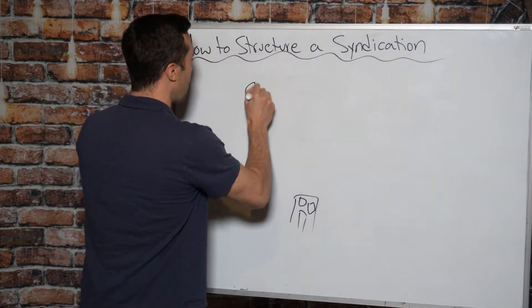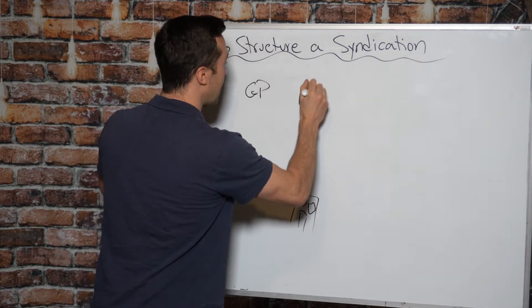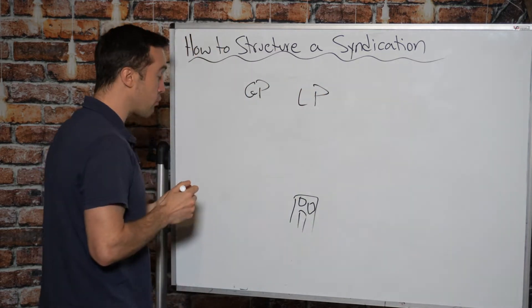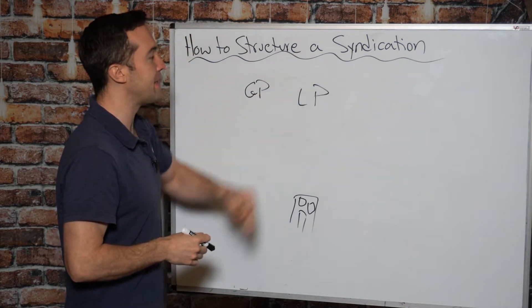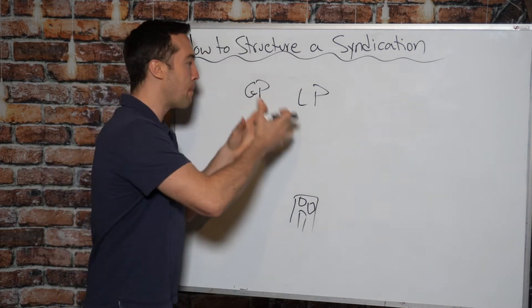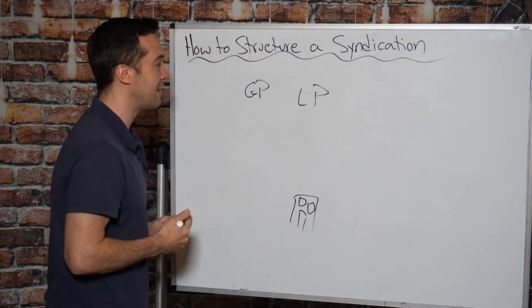So in a syndication, we have two sides. We have the GP and the LP. The GP, the general partnership is the active party in the deal. And then the LP, the limited partnership, the passive investors in the deal. This could be one person. This could be many.